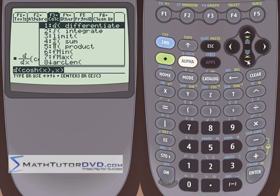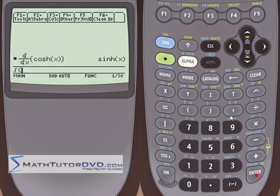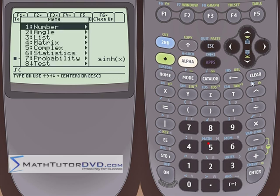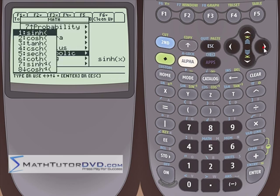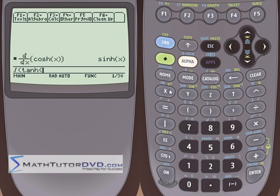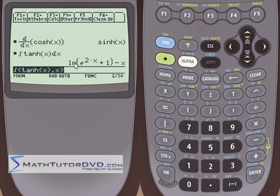And you can do the same thing with integration. Let's go down here and integrate. Let's go to the math menu. Let's go up to the hyperbolic area. Let's do hyperbolic tangent, let's say, of x. We're going to integrate hyperbolic tangent of x, and let's integrate it over x. We'll hit enter. It'll think for a second. And here, the natural log of e to the 2x plus 1 minus x, that's the integral of that guy here.